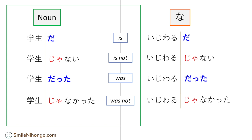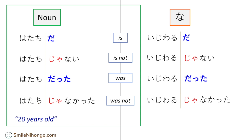If you want to conjugate the sentence 'I am 20 years old' or 'someone is 20 years old,' it works the same way in plain form.